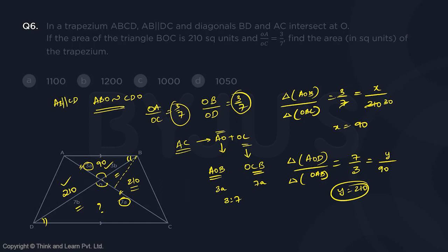So what we will have here is area of triangle ABO by area of triangle CDO should be equal to the side squared. So this should be 9 by 49 because 3 by 7. So we already have ABO, which is 90. So this is 90 by what we want to find is Z. So your Z will turn out to be 490. So this is 490.